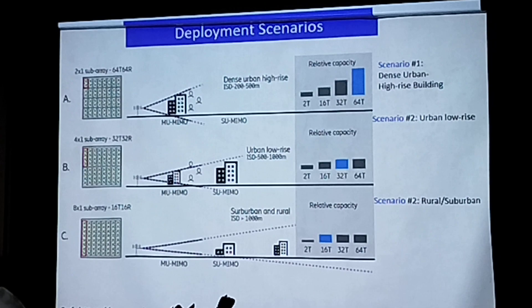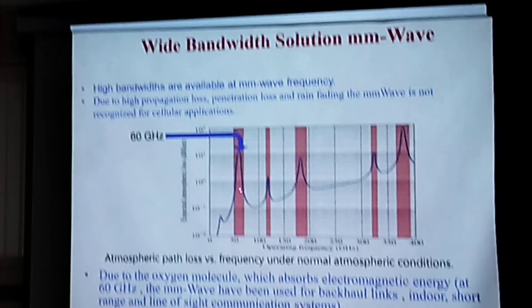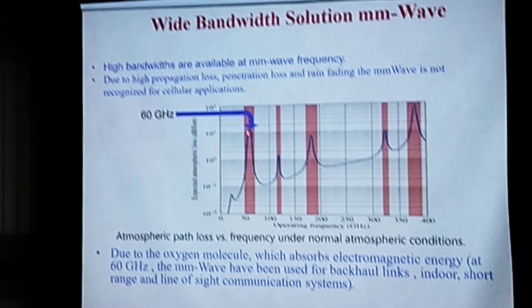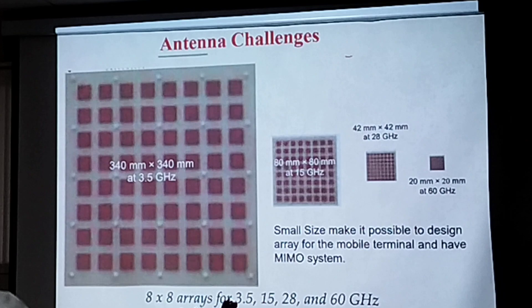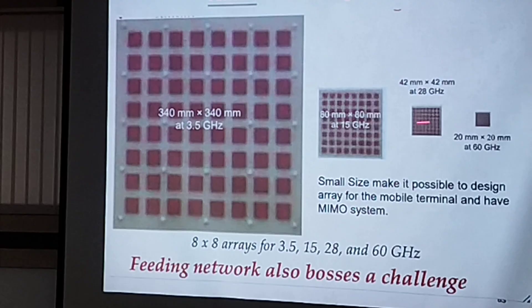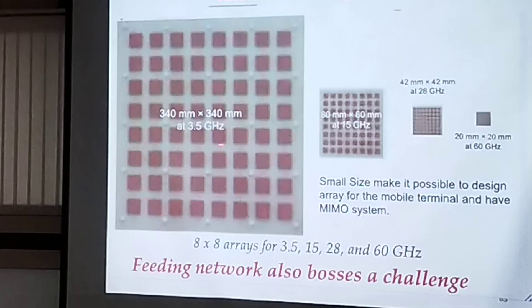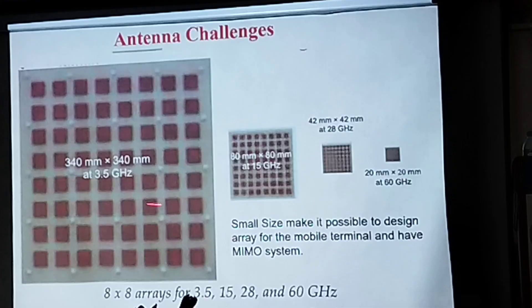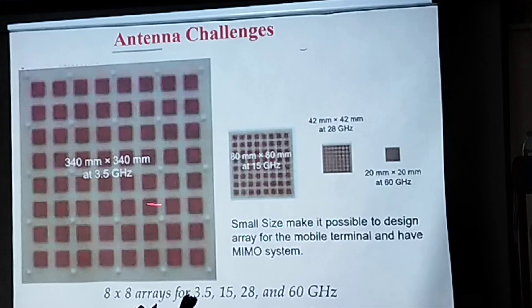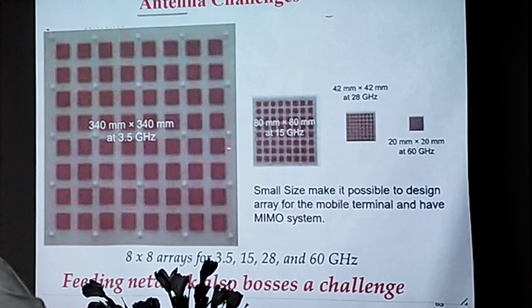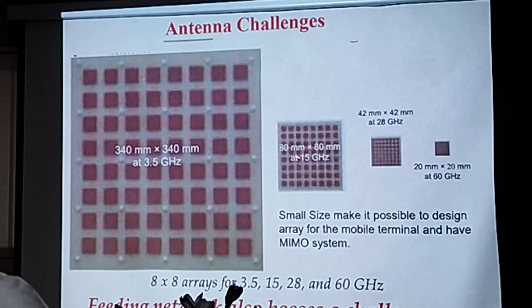As frequency increases, attenuation levels increase. For 6G, they have chosen 60 GHz, which has more attenuation compared to other bands. When you see the antenna sizes at different frequencies: as frequency is lower, the overall antenna array size will be very big because the antenna element itself is bigger. When you start increasing to higher frequency, the total panel size will be small because the antenna element size is smaller — since lambda is lambda/2. Up to 60 GHz, the total antenna size comes to around 2 centimeters or less.